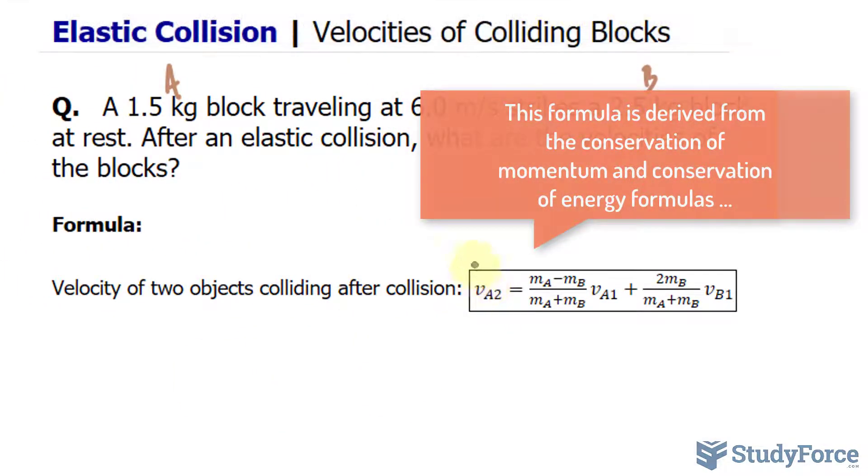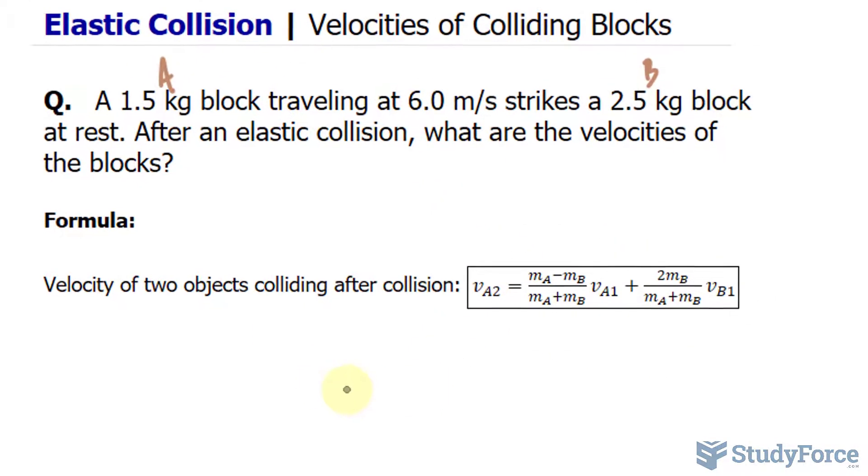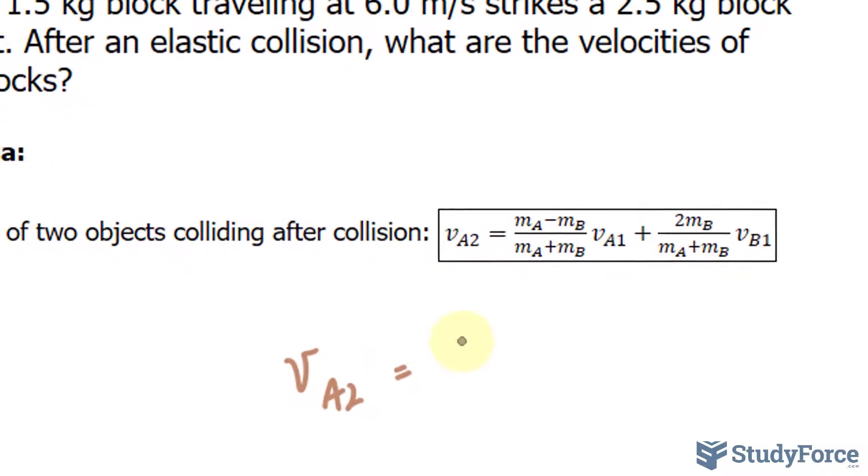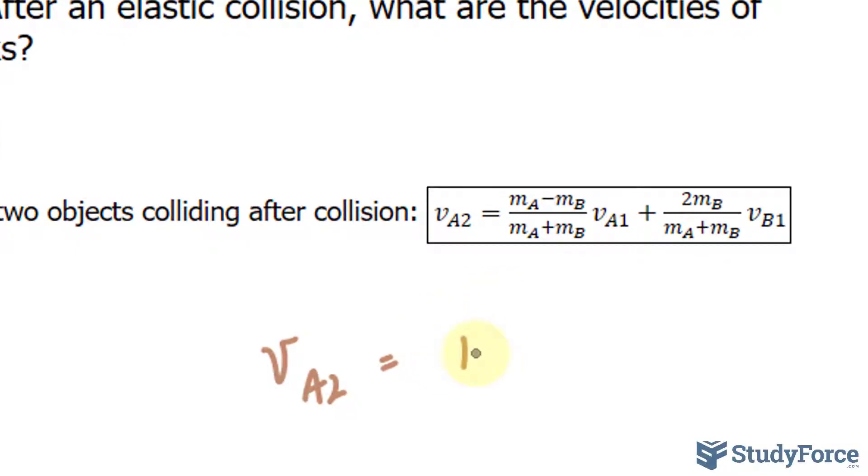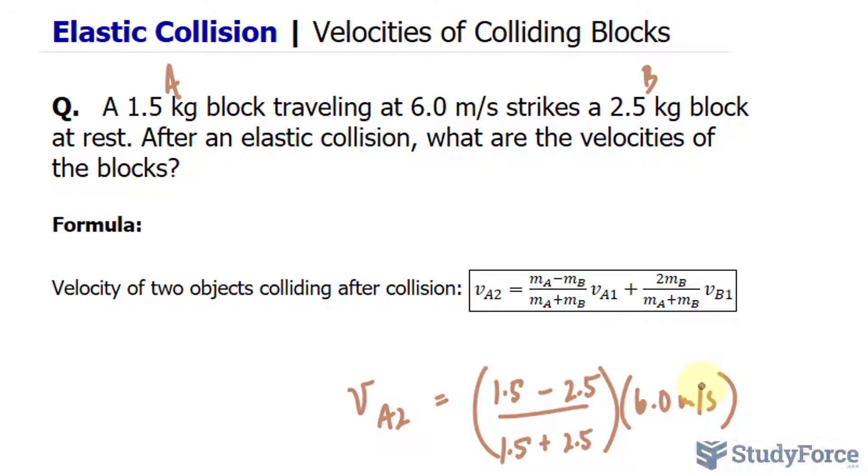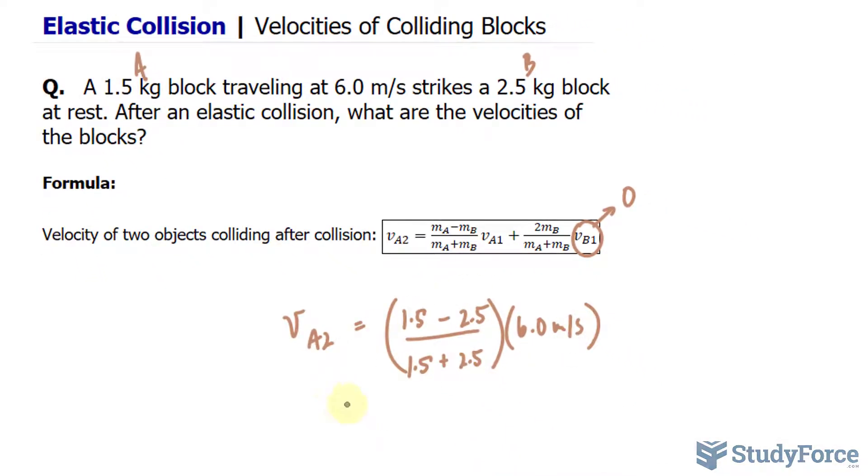This part says the velocity of block A after the collision is equal to the following. Let's calculate that. The velocity of block A after the collision will be its mass, which is 1.5 minus the mass of block B, that's at rest, over again the mass of block A plus that of block B. All of this will be multiplied to the velocity of block A being 6.0 meters per second. Now the good thing about this question is that block B is at rest. So this factor is equal to zero and anything times zero makes nothing. So all of this becomes zero and all we have to worry about is calculating that.